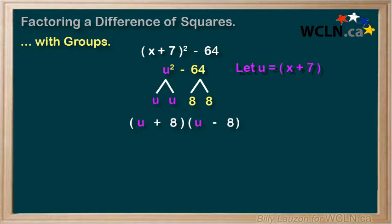And we're done. Well, no, almost. We need to replace the u with the x + 7. So we'll set up a large set of square brackets. We can put the x + 7 in for the u. The 8 goes in the back of each bracket. One is positive and one is negative.